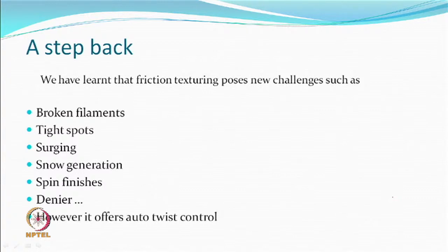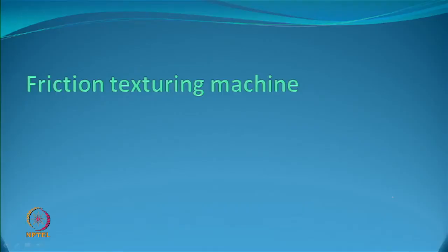Friction texturing does offer auto twist control. These friction texturing machines are also draw texturing machines. So we are not going to be using a fully drawn yarn; we are going to be using a POY. There is a POY and also a friction twisting system.